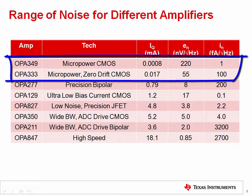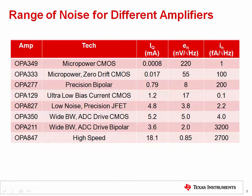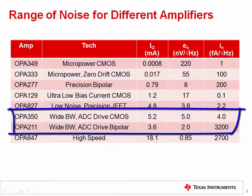Furthermore, bipolar amplifiers tend to have lower noise than CMOS amplifiers for a given current. For example, compare the OPA350 CMOS amplifier to the OPA211 bipolar amplifier. Notice that the bipolar amplifier has lower noise than the CMOS amplifier, even though the quiescent current is higher.